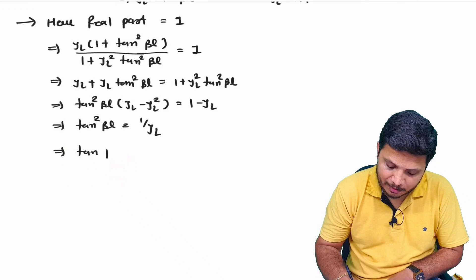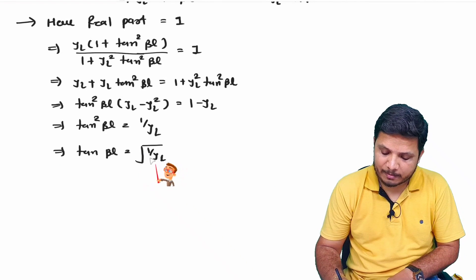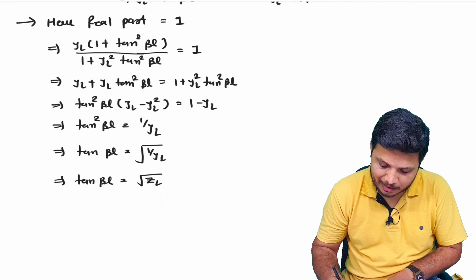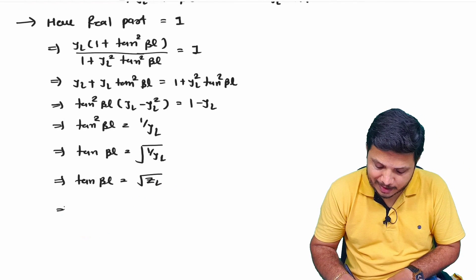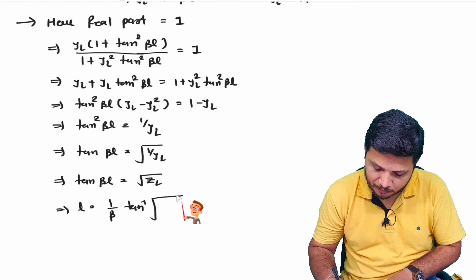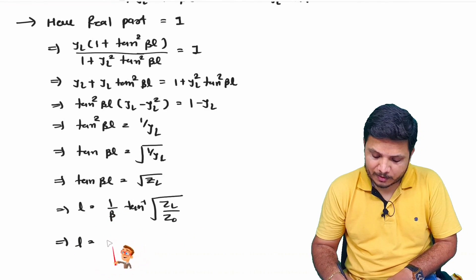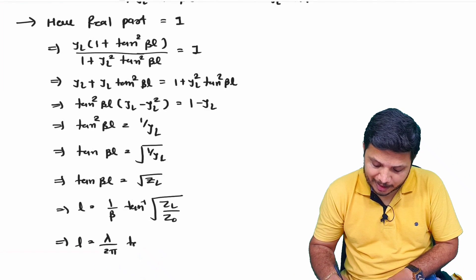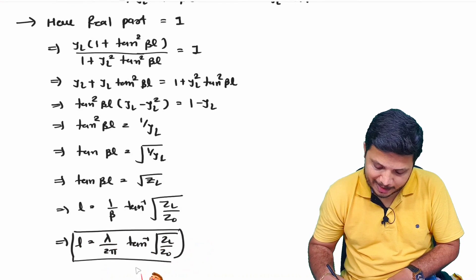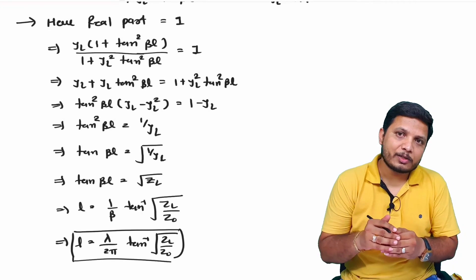Since tan βL = √(ZL/Z0) and β = 2π/λ, the stub position is: L = (λ/2π)·tan⁻¹(√(ZL/Z0)). This equation identifies the position of the stub. You will need to understand and apply this to calculate the stub position.